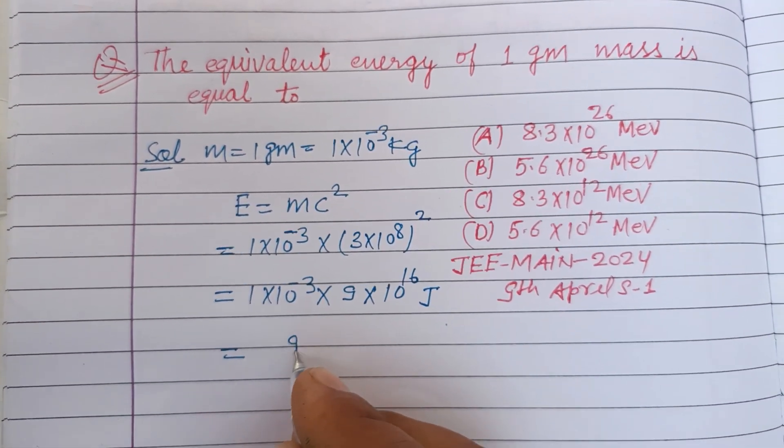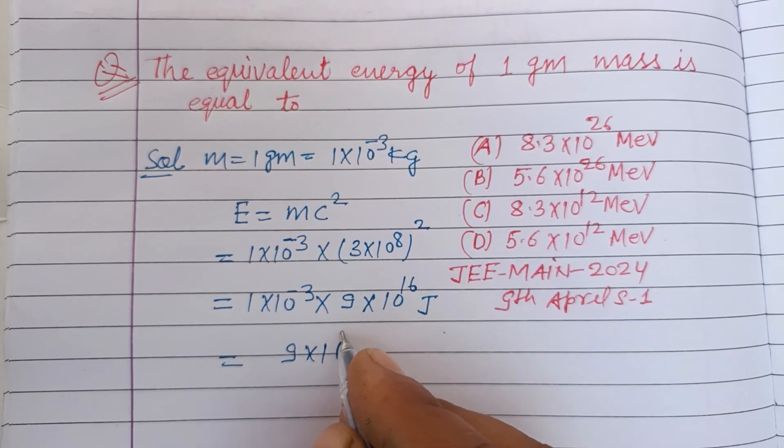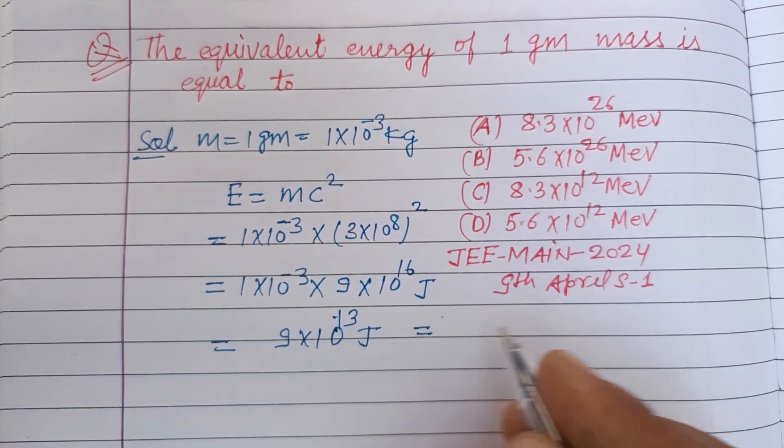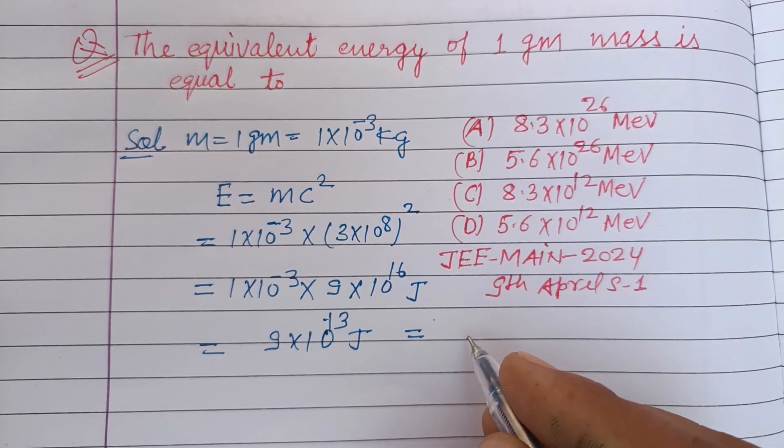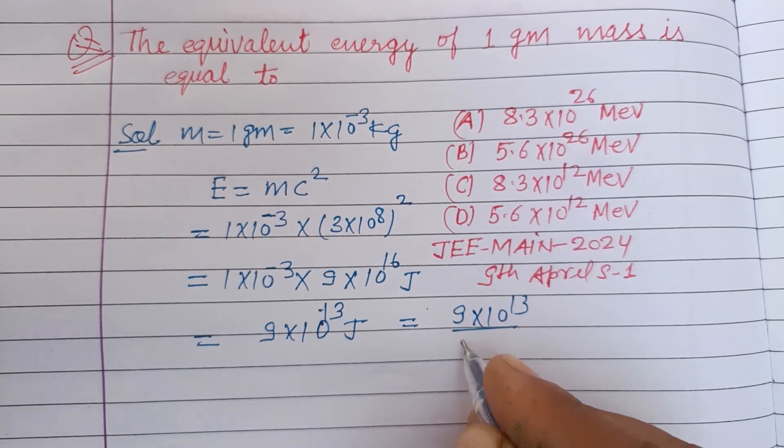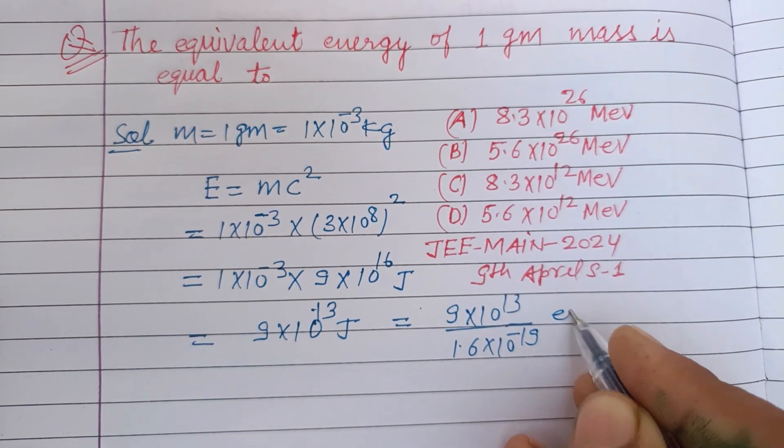Now this becomes 10... 9 into 10 to the power 13 Joule. Now taking it and changing it to electron volts, so dividing this by 1.6 times 10 to the power minus 19 electron volt.